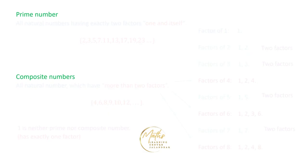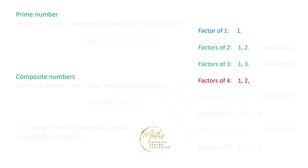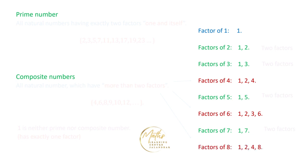The next terms are prime number and composite number. Before we look at their definitions, let us list the factors of certain numbers. Factors of 1: just 1. Factors of 2: 1 and 2. Factors of 3: 1 and 3. Factors of 4: 1, 2, 4. Factors of 5: 1 and 5. Factors of 6: 1, 2, 3, 6. Factors of 7: 1 and 7. Factors of 8: 1, 2, 4, 8.